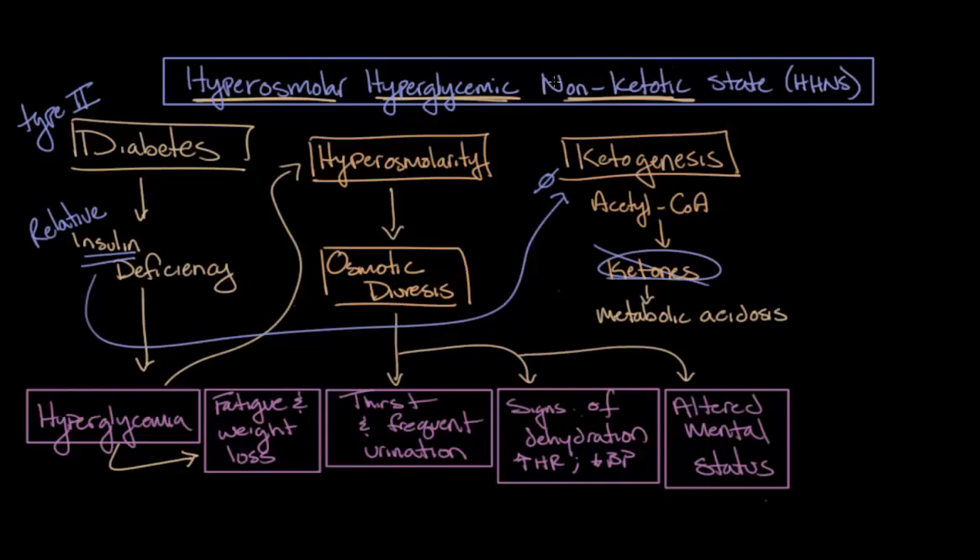Now that we understand the physiology or the metabolism that underlies the clinical presentation of HHNS, let's use this knowledge to also understand how HHNS can be treated. First off, due to how severe HHNS can become, anyone with HHNS, or anyone even suspected of having HHNS, should really be treated in the intensive care unit, or the ICU of a hospital. And there are two major treatments that need to occur.